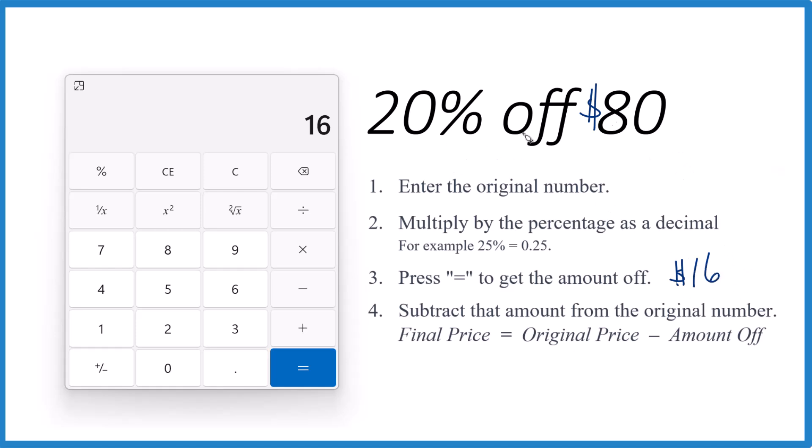If you want 20% off $80, that tells you the final price you're going to pay. So we take the original, $80, subtract the amount off, that was the $16 right there.